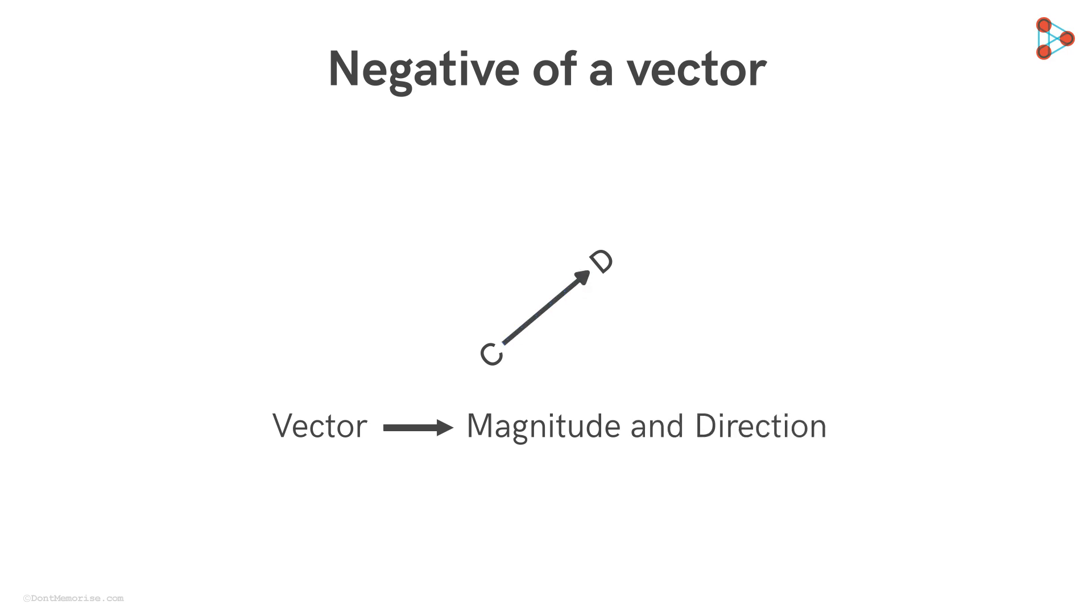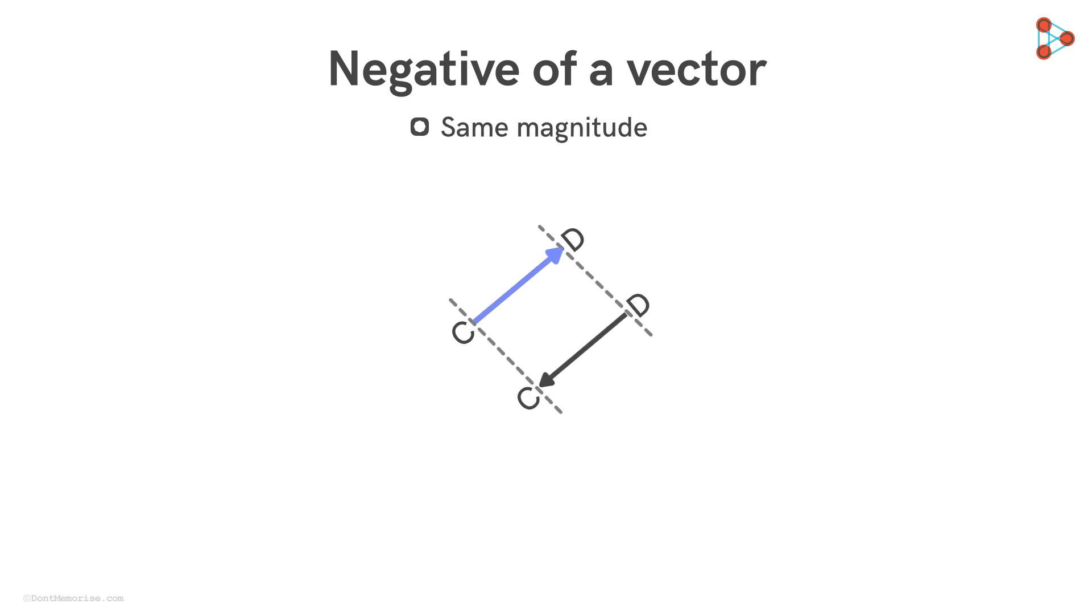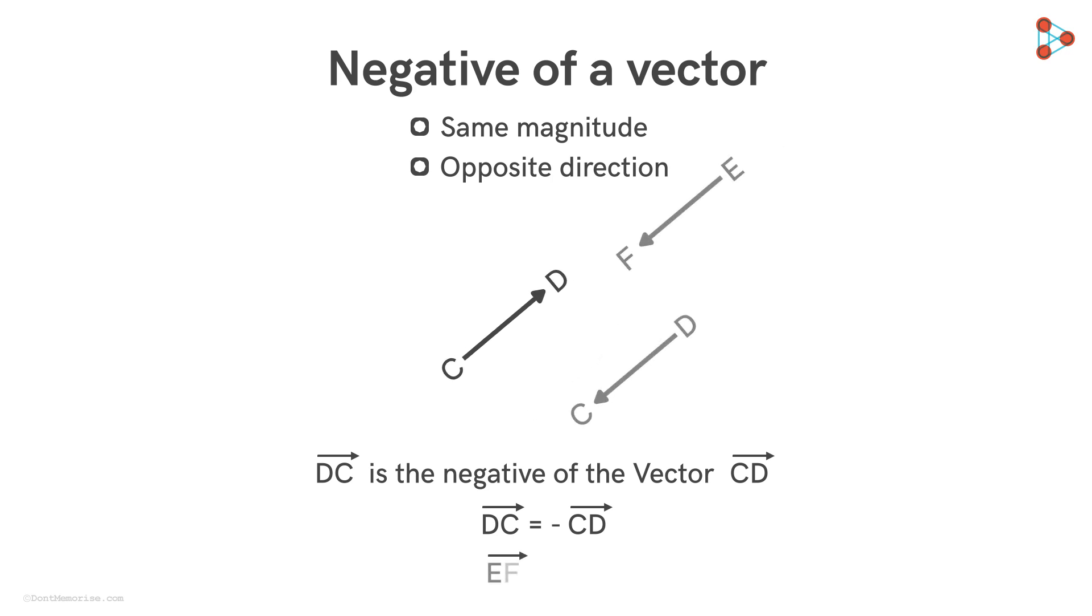So the negative of the vector CD is a vector which has the same magnitude as that of CD and its direction is opposite to that of CD. So vector DC will be the negative of the vector CD. And its denoted like this. Also notice that vector EF will be the negative of vector CD.